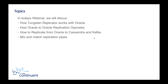We're going to have a look at how the Replicator works, starting with basic Oracle to Oracle replication. Then we're also going to look at how we replicate out to other targets. Today we're going to show you Cassandra and Kafka, though we replicate to a whole variety of other targets as well. We're going to show you how you can mix and match that process — in fact, the demo will show all three targets all from the very same Oracle server.